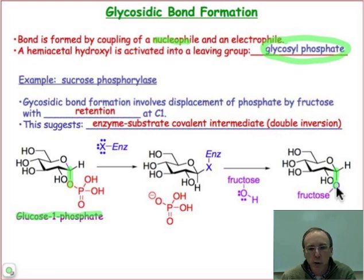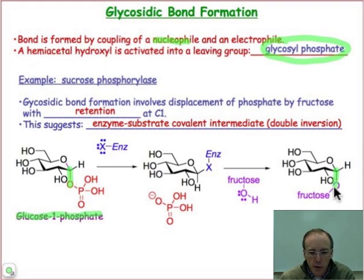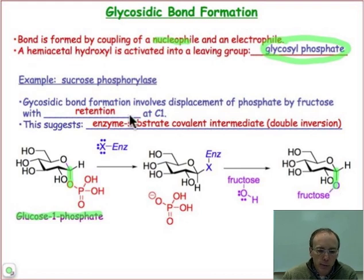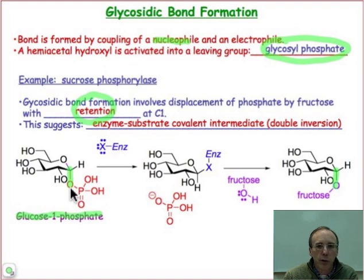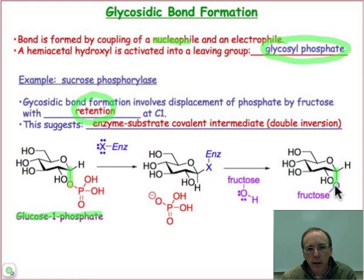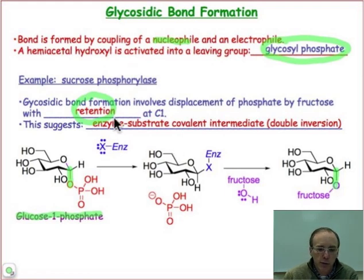Fructose is the nucleophile. Its hydroxyl group at the C2 position is what's going to serve as the nucleophile. A key part of the mechanism is that there's a retention of stereochemistry. Notice we start with alpha glucose-1-phosphate and we end up forming the alpha configuration at glucose — there's a retention of configuration.